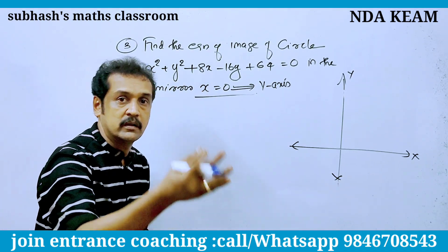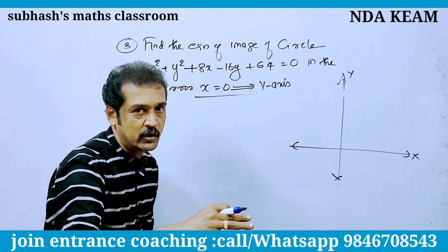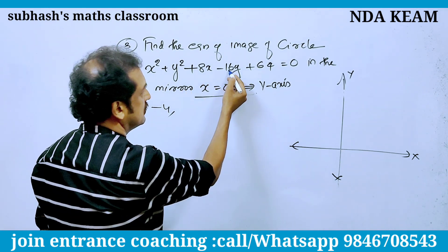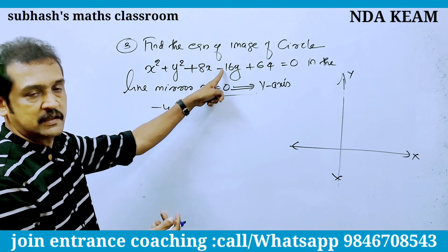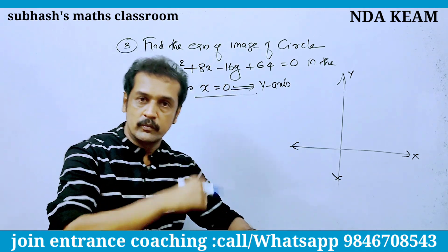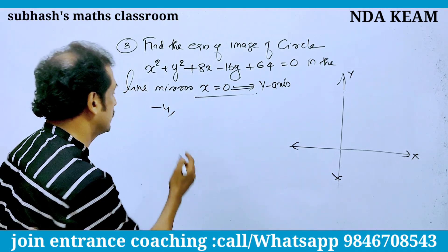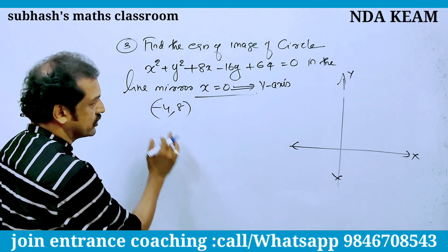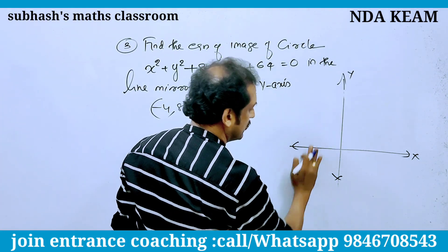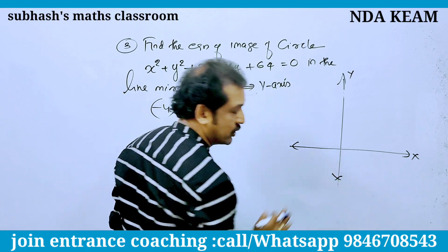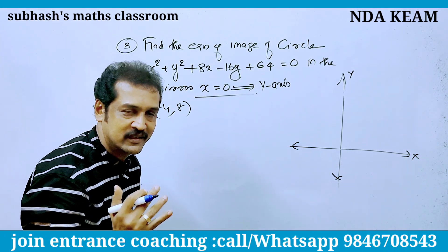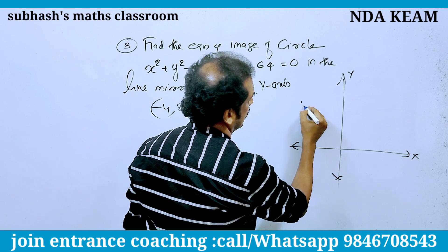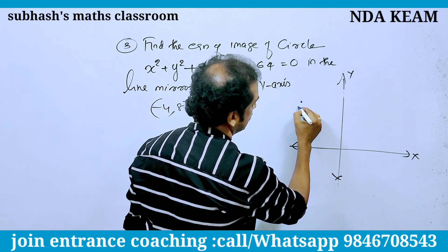From the equation of the circle, the value is 4. Sin mathematical gives minus 4. Next, minus 6, minus 8, sin mathematical gives plus 8. So the center is (minus 4, 8).